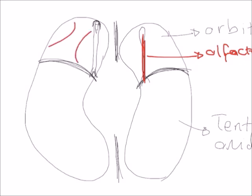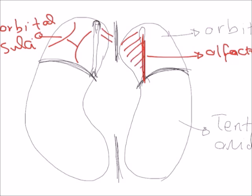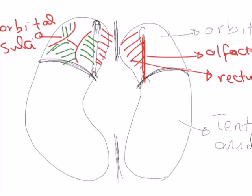The rest of the orbital surface is divided into four parts by the orbital sulcus. The gyri of the orbital surface include: the gyrus rectus, which is medial to the olfactory sulcus, and the orbital gyri, which lie between the H-shaped orbital sulcus.